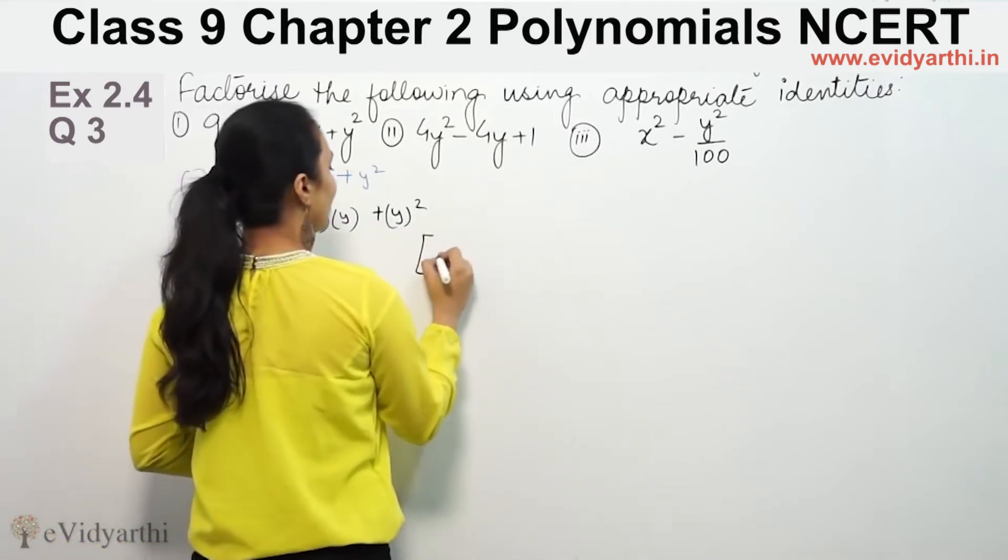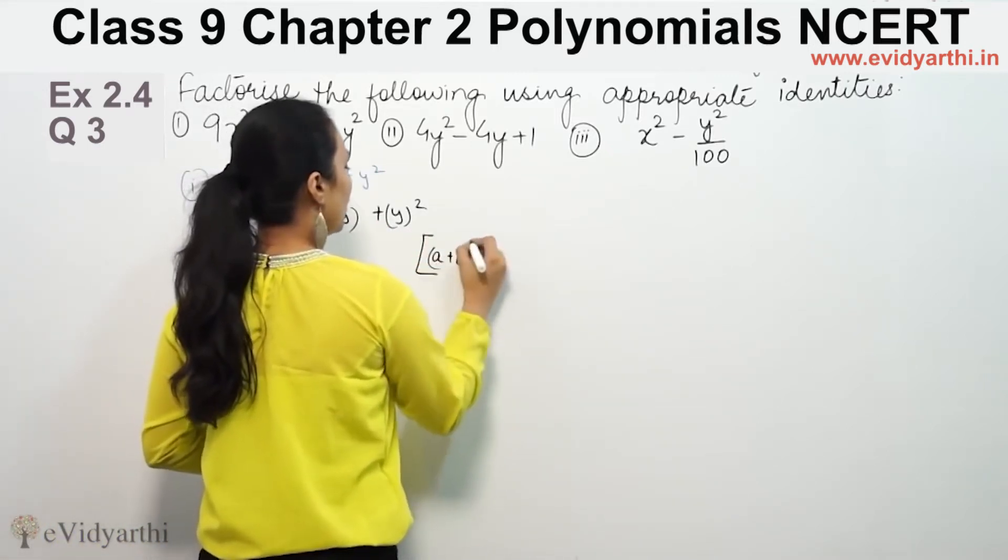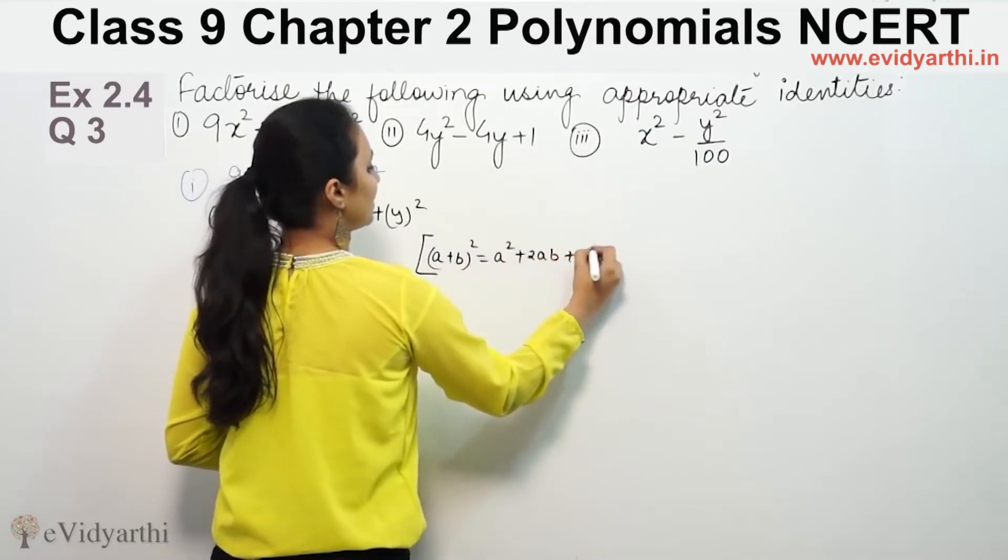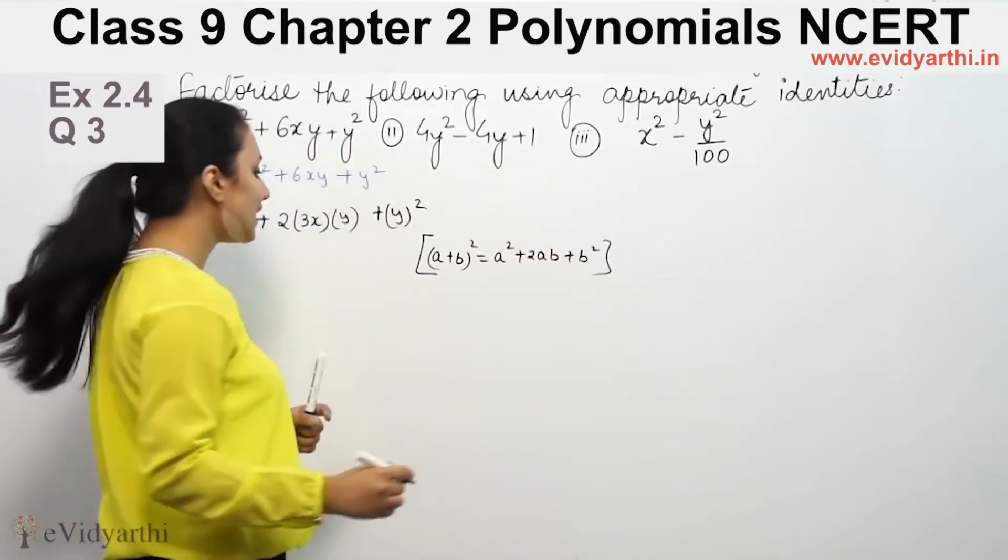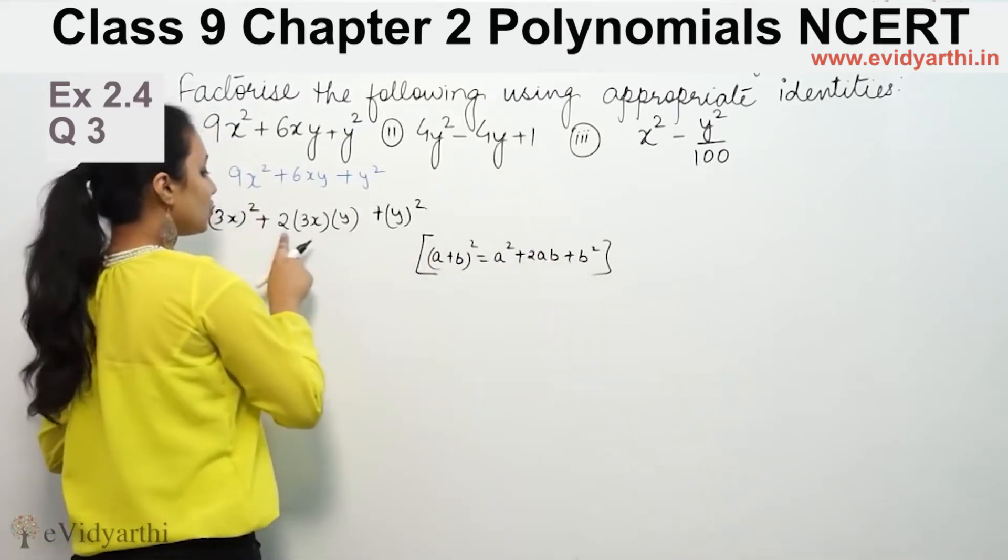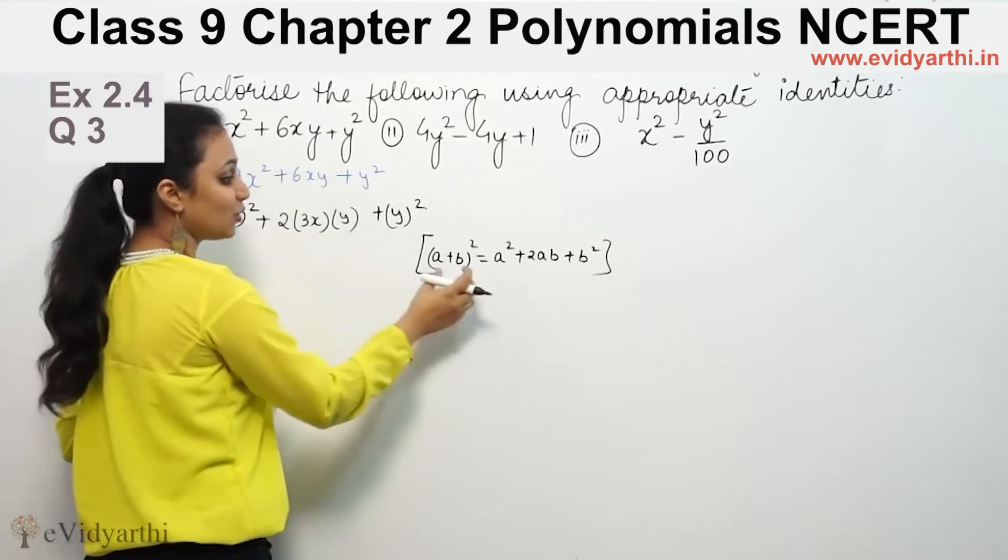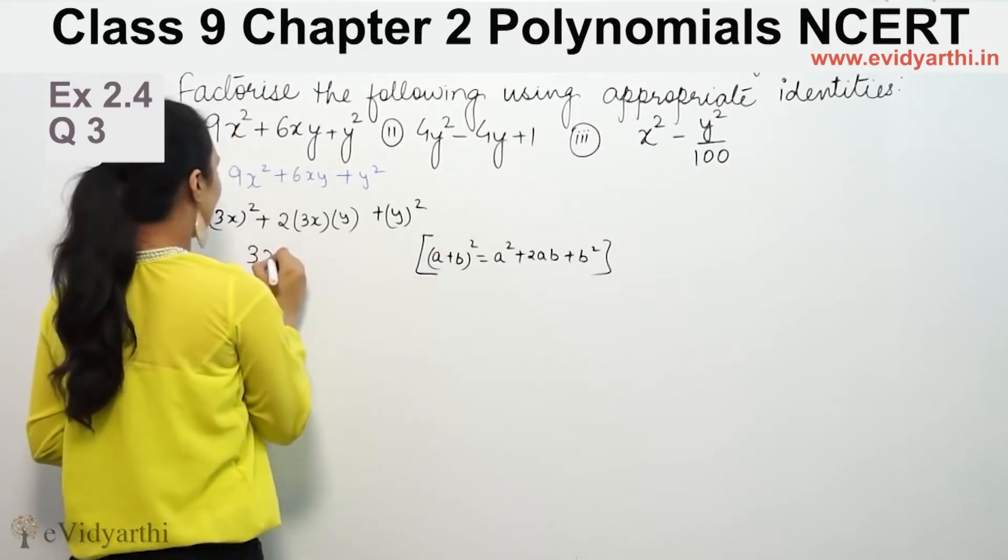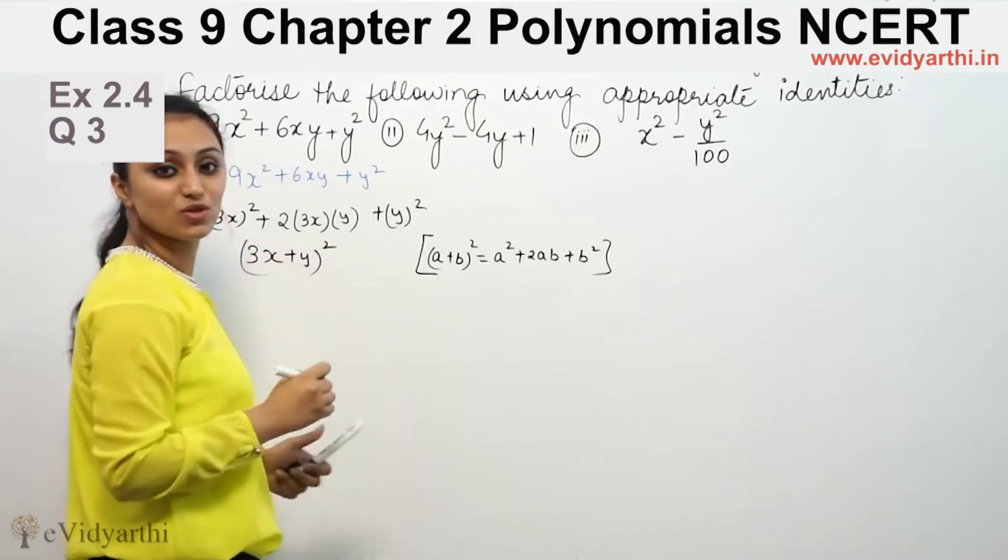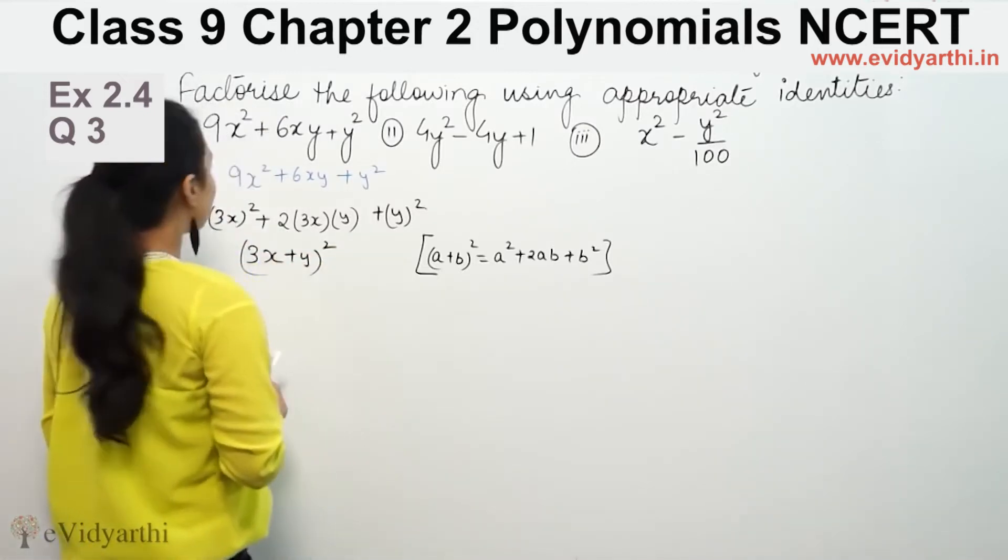Our identity is (a+b)² = a² + 2ab + b². So this identity is here: a² + b² is 2 times a times b. This is (a+b)². That means a is 3x, b is y. (a+b)² equals (3x+y)².